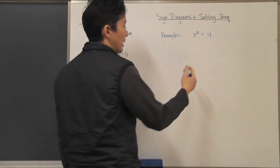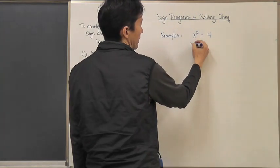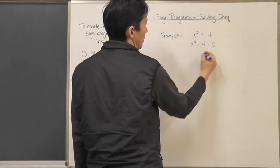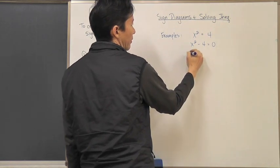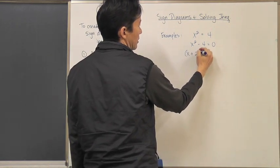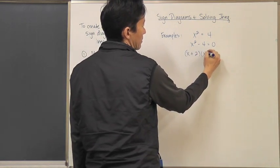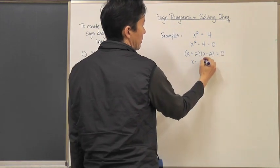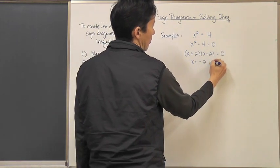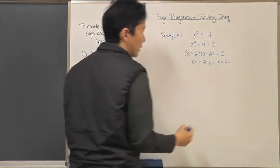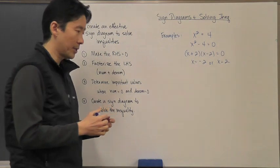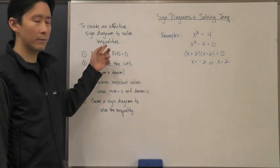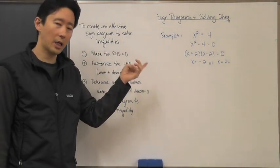I'm going to do an equality first. If we wanted to solve this, basically what we would do is say x squared minus 4 is equal to zero. So therefore we get x plus 2 and x minus 2 equals zero, so x equals negative 2 or x equals 2.